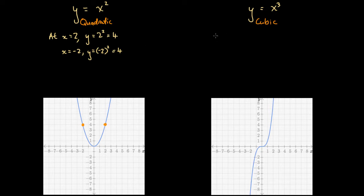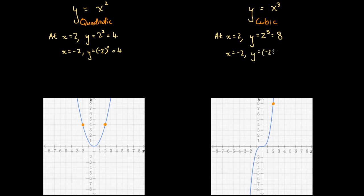Now let's substitute the same two x values into the cubic function. At x equals two, y equals two cubed, which is two times two times two, giving eight — that's two units right of the origin and eight units up. At x equals minus two, y equals minus two cubed, and a negative times a negative is a positive, then times a negative again is a negative, so this gives negative eight — two units left of the origin and eight units down.